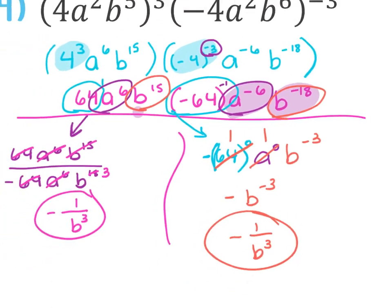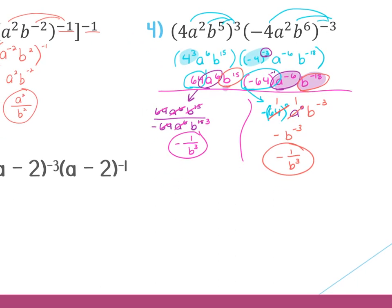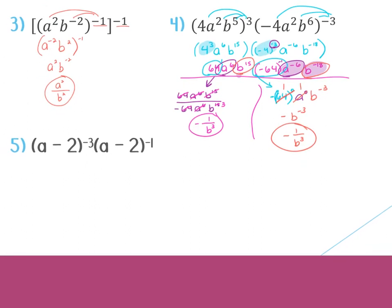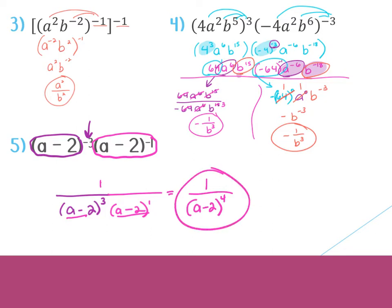There's a lot going on in that question, so be really careful. The more steps there are, the more opportunities for silly mistakes. Number 5 — a minus 2, so this whole thing is being raised to the negative 3, which means I move (a minus 2) to the 3rd to the bottom. Then (a minus 2) is being raised to the negative 1, which means I move (a minus 2) to the 1st to the bottom. There's still a 1 in the top, and these have the same base, which means this becomes 1 over (a minus 2) to the 4th. You don't need to expand it — you can leave it the way it is.